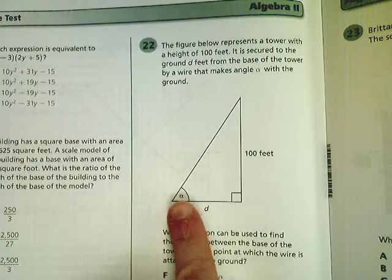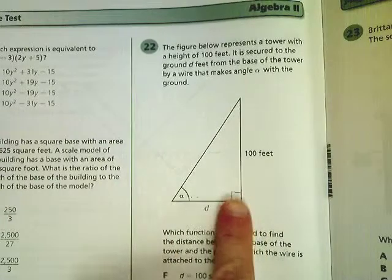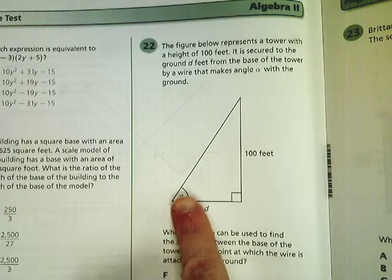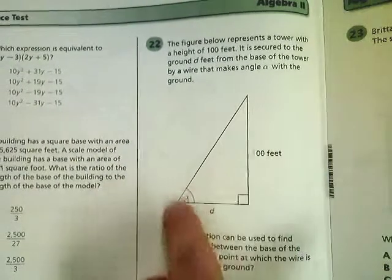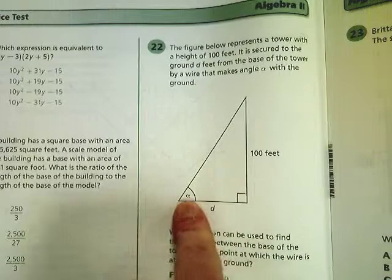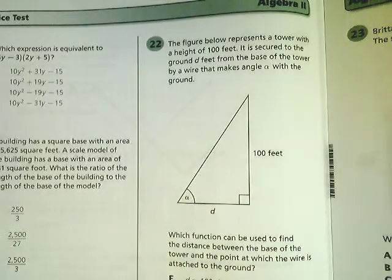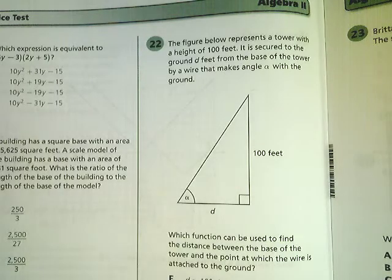And it makes an angle from the base of the tower by a wire. So the angle is with the ground from the top down, angle alpha. Which function can be used to find the distance between the base of the tower and the point at which the wire is attached to the ground?